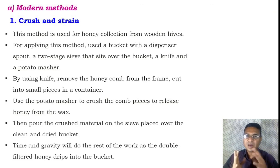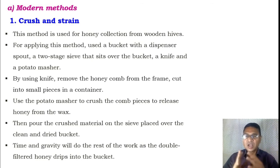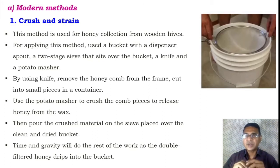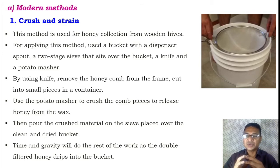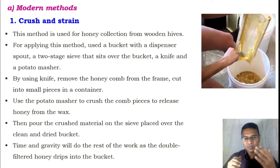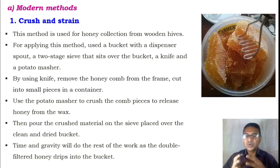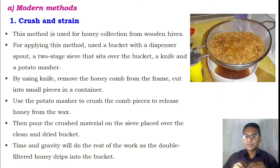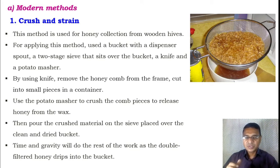Now moving toward the modern methods. The first is the modern crush and drain method, used for collection of honey from wooden or artificial hives. For this method, you need a bucket with a dispenser spout, a two-stage sieve that sits over the bucket, a knife, and a potato masher or crusher. Using the knife, remove the honeycomb from the frames and cut into small pieces in a container. Use the potato masher to crush the comb pieces to release the honey from the wax. Then pour the crushed material on the sieve placed over a clean dried bucket, and as per gravity, all the honey percolates and stores into the bucket.